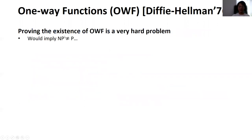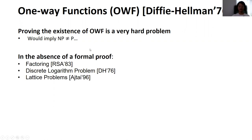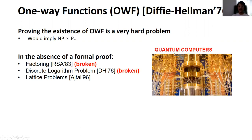However, proving the existence of one-way functions is a very hard problem and would imply NP is not equal to P. Therefore, in the absence of a formal proof, people have come up with one-way function construction candidates, which are based on different computational assumptions, including the hardness of the factoring problem, the hardness of the discrete logarithm problem, and the hardness of lattice problems. However, we know that if we have quantum computers, then the factoring assumption and the discrete logarithm assumption are broken.